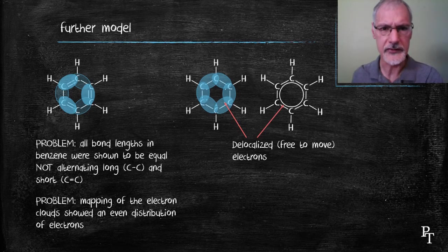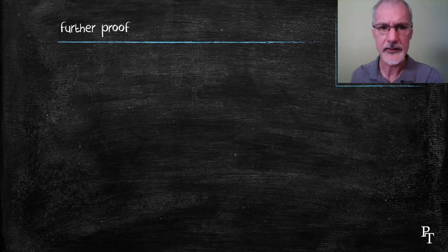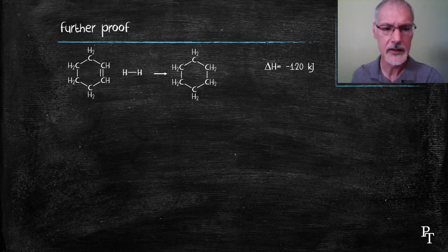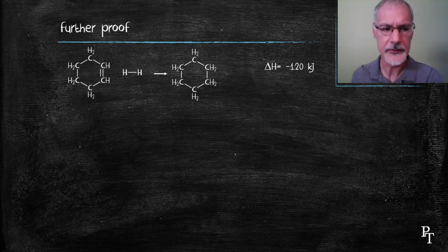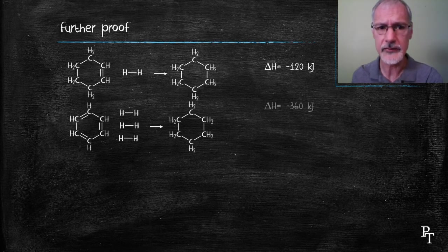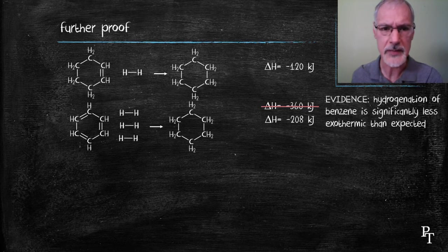There's further proof that this is the correct interpretation. If we take something with a single double bond in it, cyclohexene, and we hydrogenate it, we get minus 120 kilojoules. If we take something that has three multiple bonds in it, we would expect to have three times the amount of energy. But actual experimental evidence suggests it's considerably less than that, indicating that we don't have this alternating pattern.